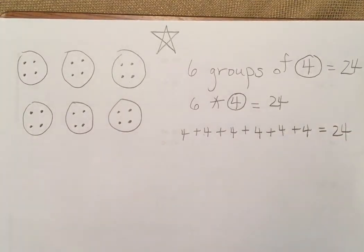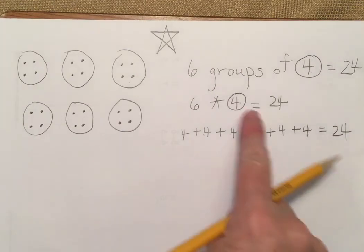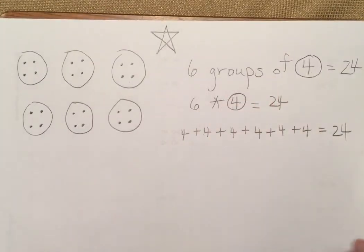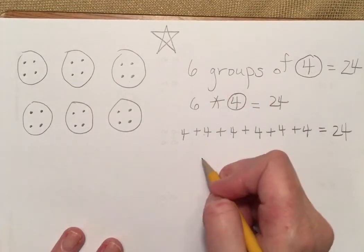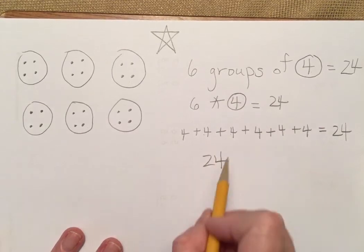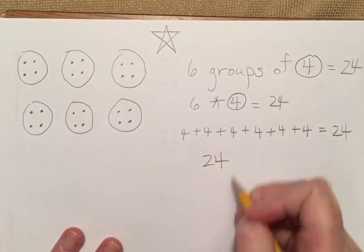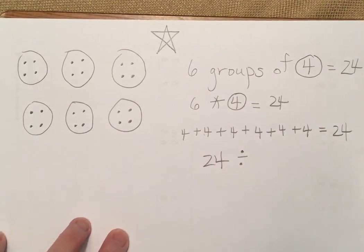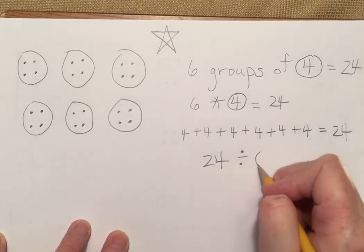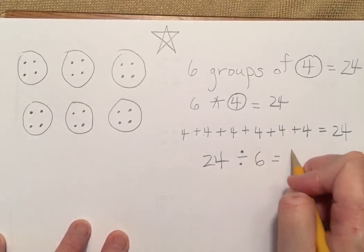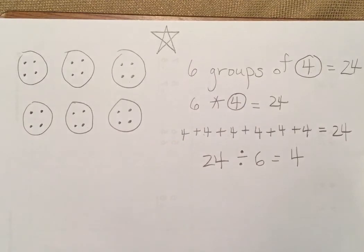The last part is to write the inverse operation. We have 24 total — that's our product — and we divided that into six groups, and that's four in each group.